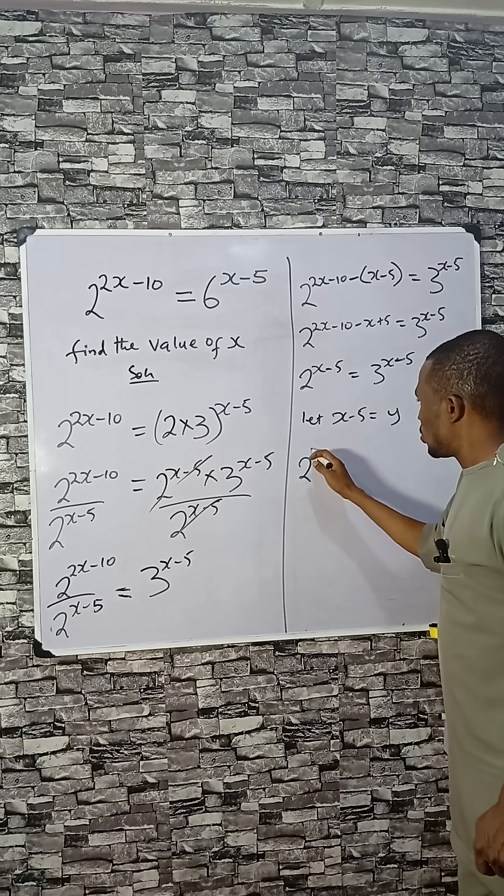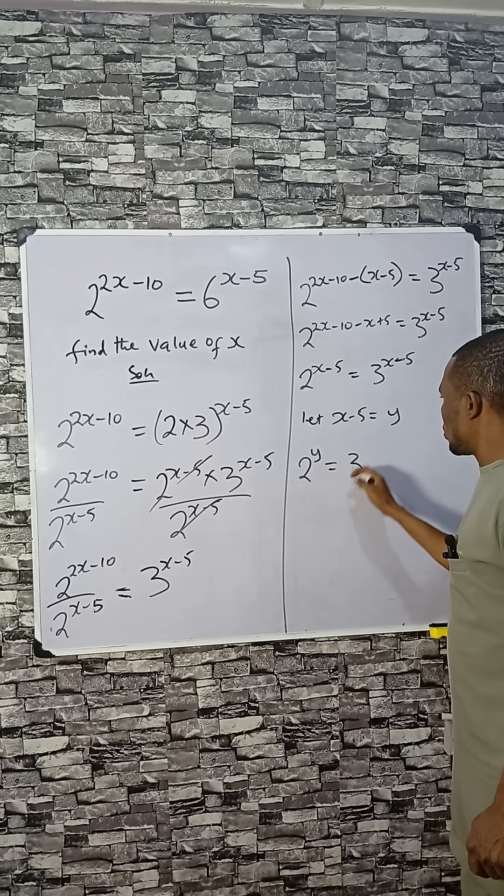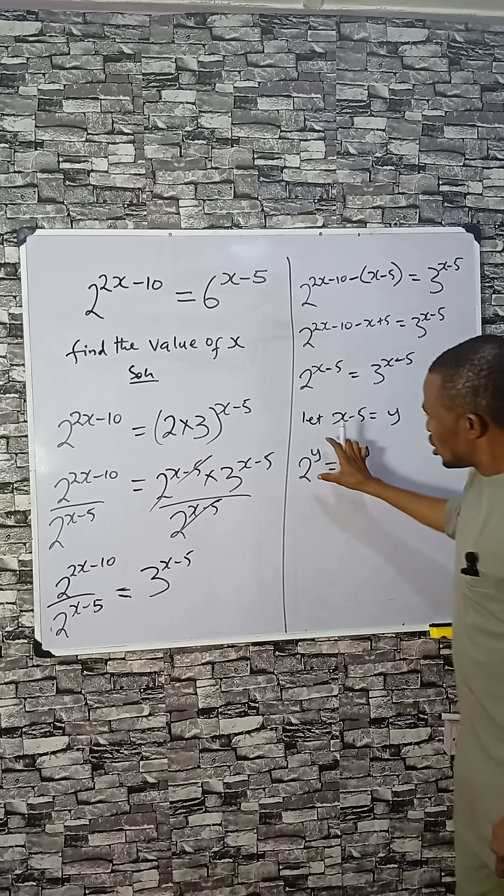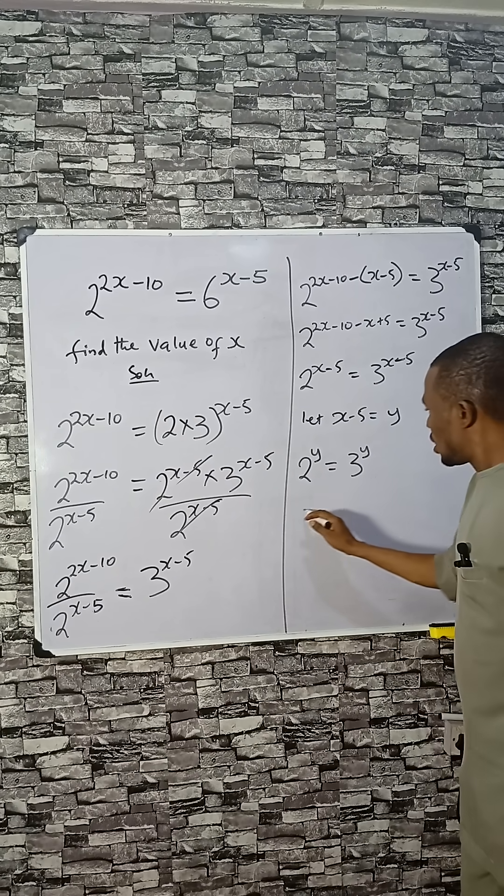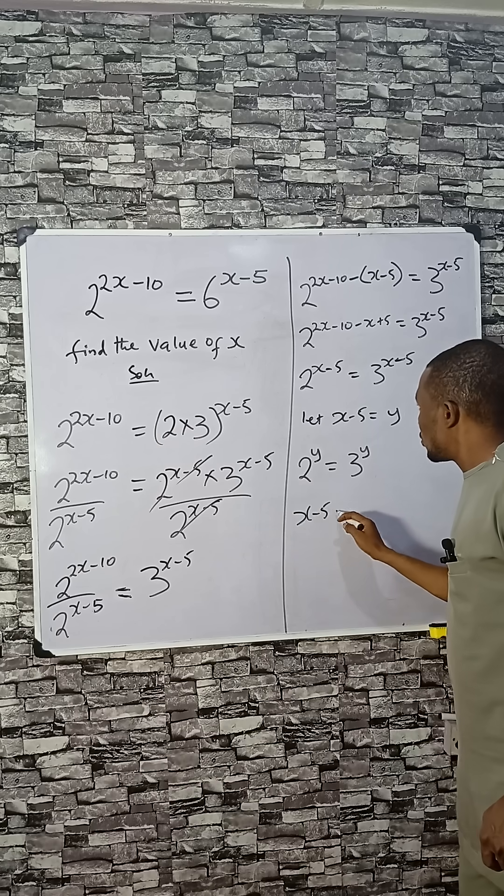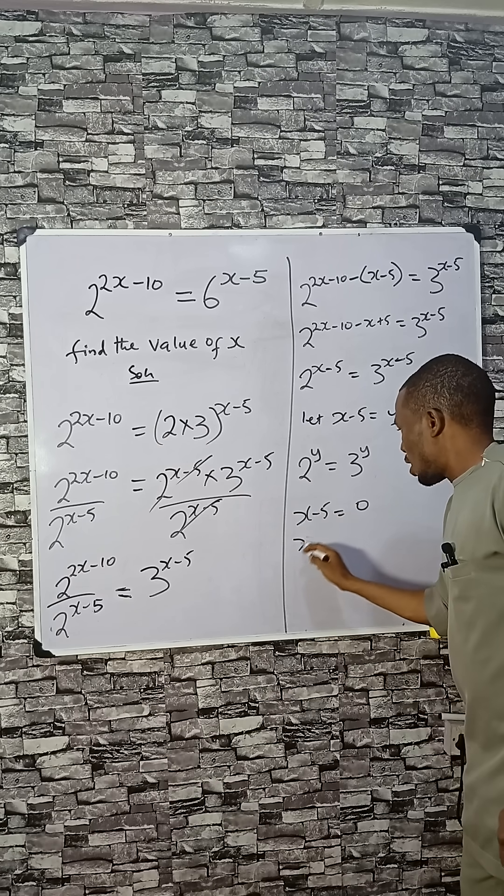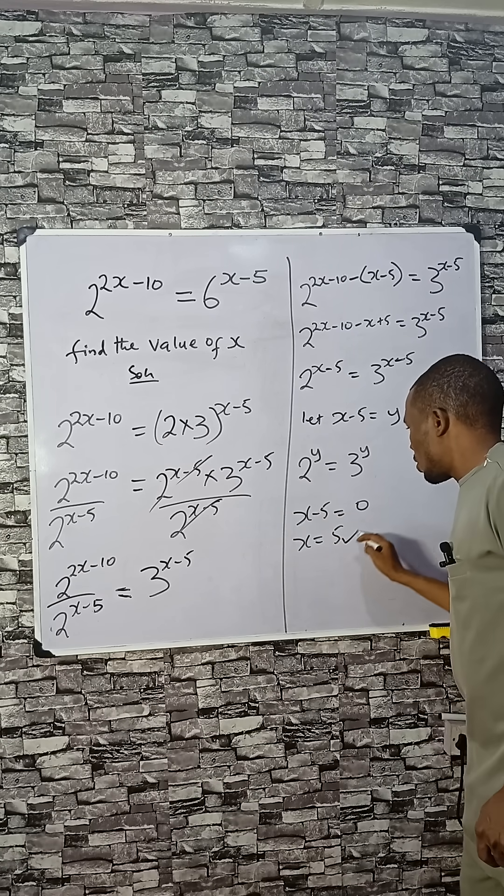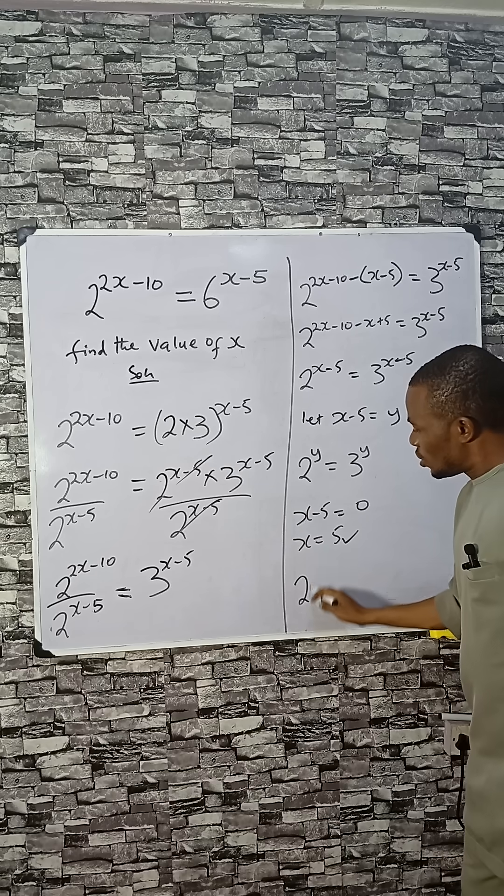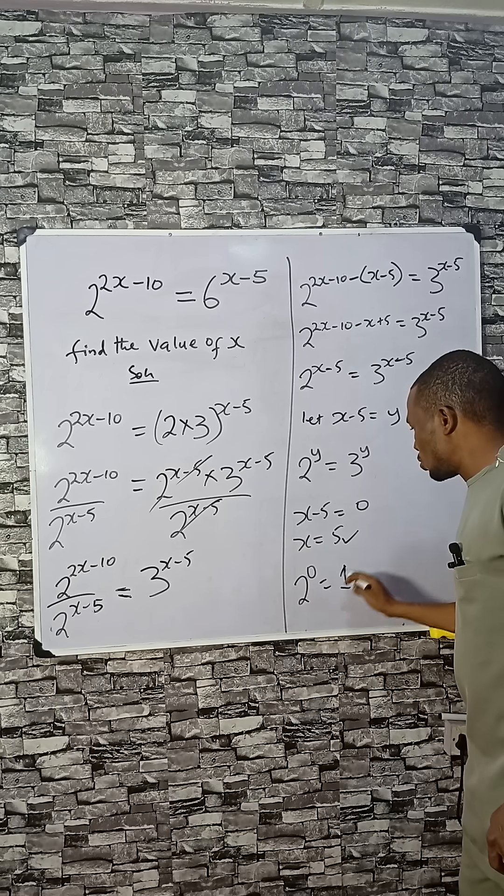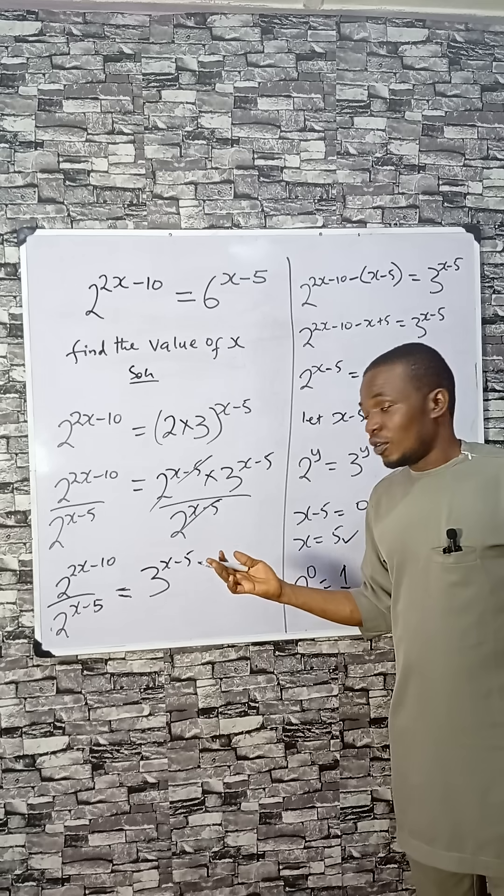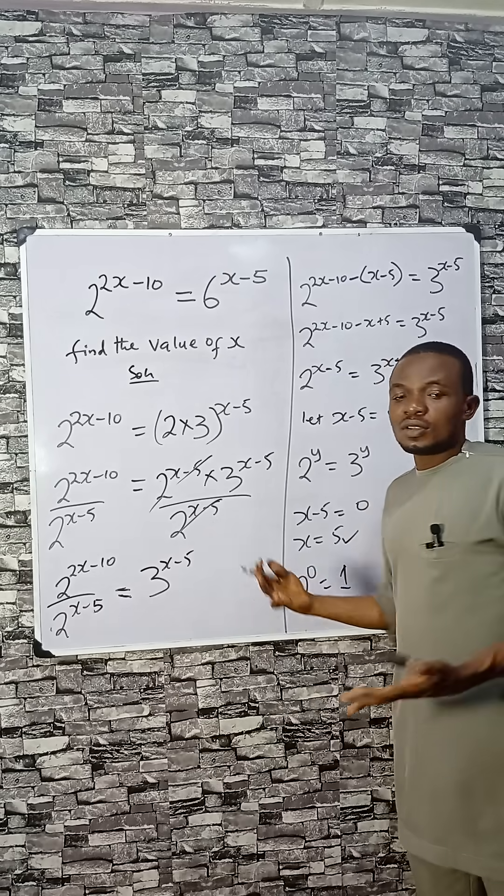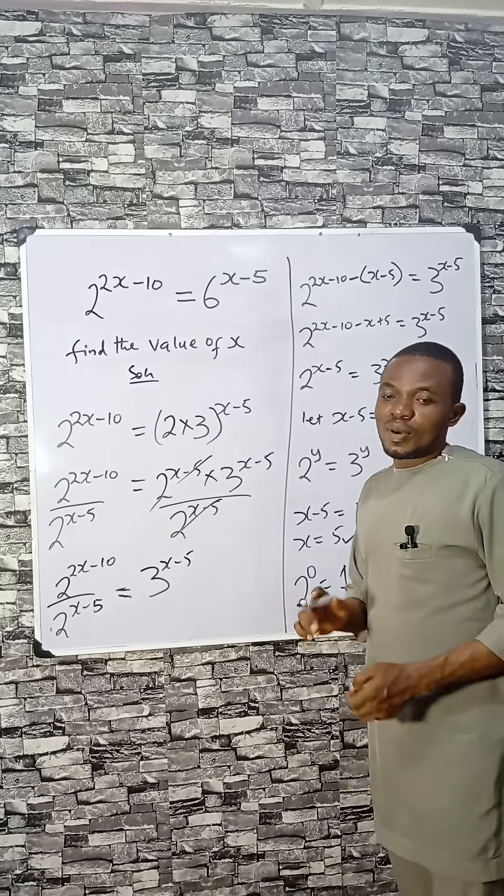If you have 2^y equals 3^y, for them to be equal, y must be 0. So let's equate x minus 5 to 0. If that happens, x equals 5, because anything raised to the power 0 is 1. So 5 is the appropriate answer. If you're watching from Facebook, follow the page; from YouTube, subscribe and share with your friends. Bye bye.